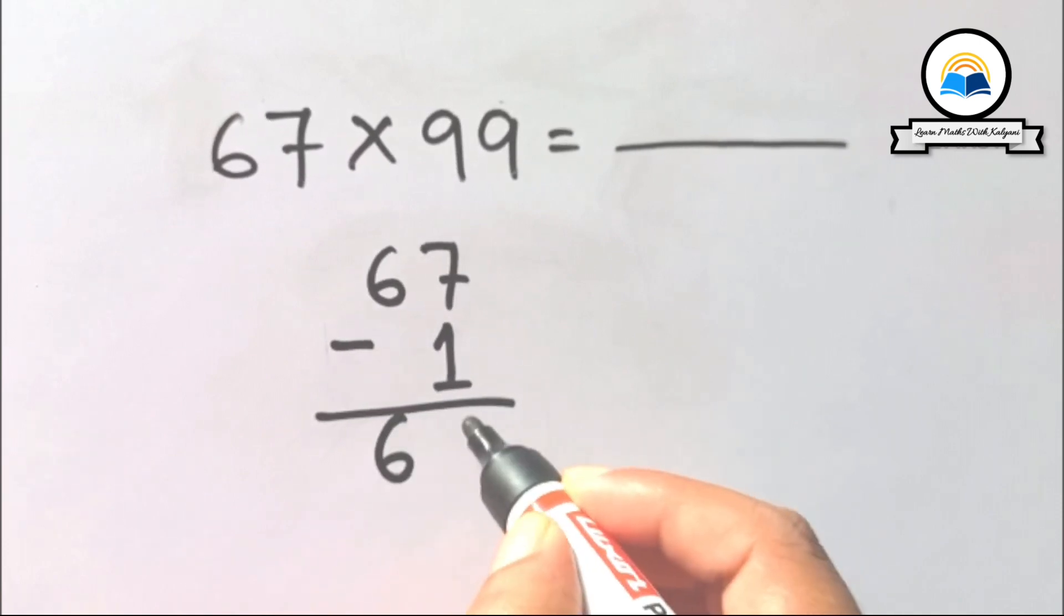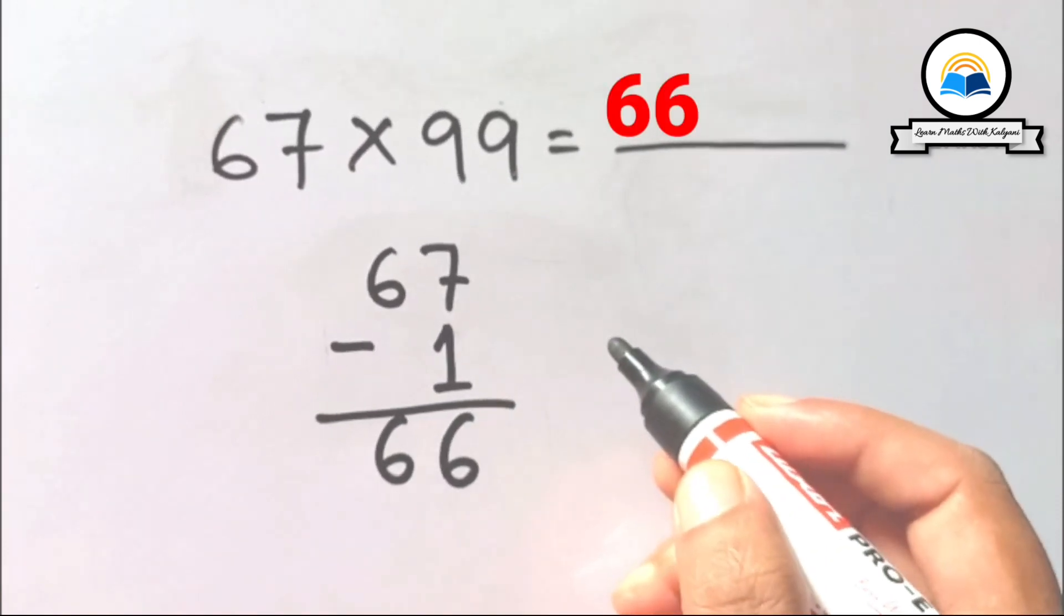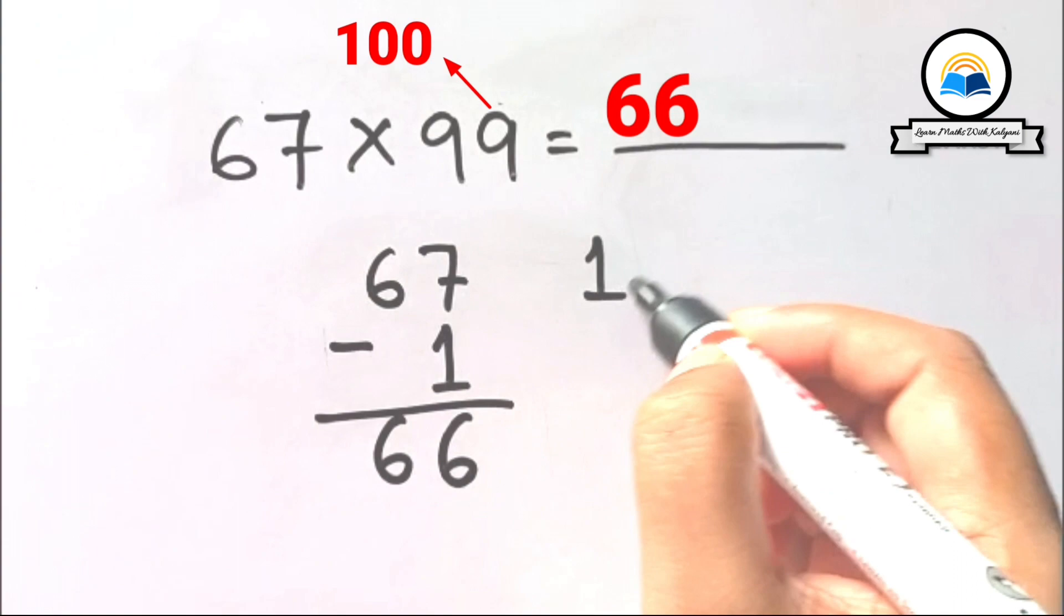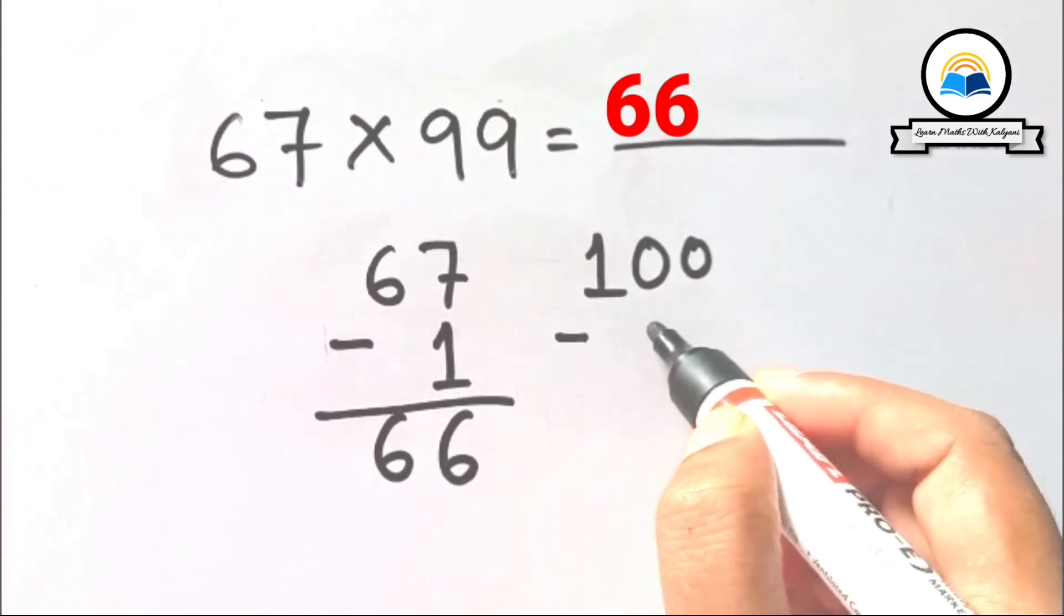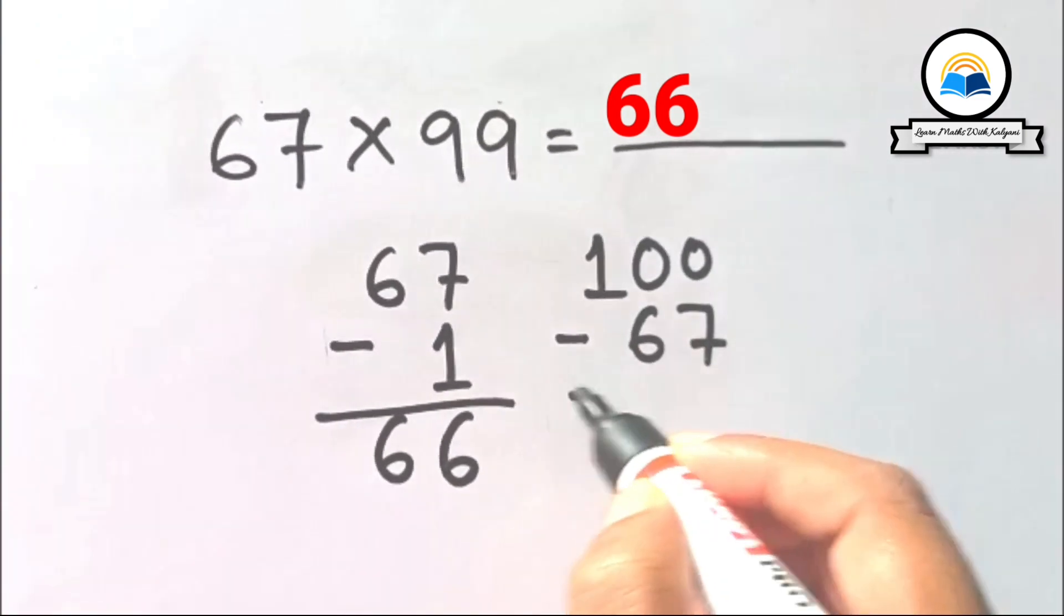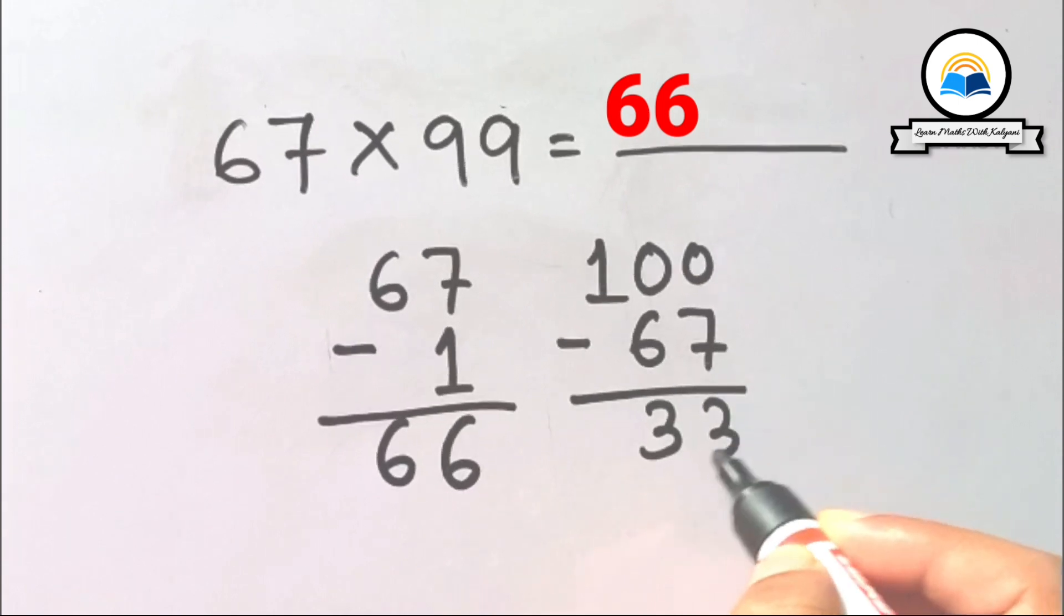Successor of 99 is 100. Subtract 67 from 100: 100 minus 67 equals 33. So the answer is 6633.